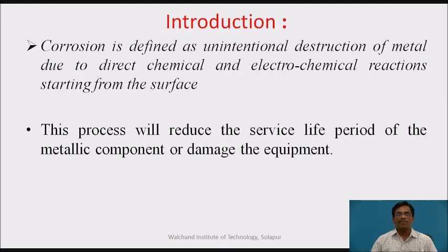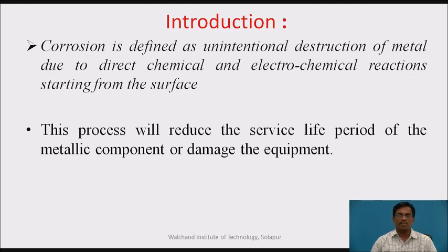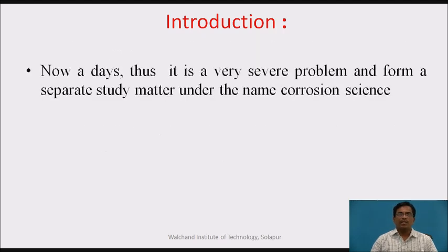Corrosion is defined as unintentional destruction of metal due to direct chemical and electrochemical reactions starting from the surface. This process will reduce the service life of any metallic material that we are using in our day-to-day practices. Thus, it is a very severe problem and forms a separate study matter under the name corrosion science.